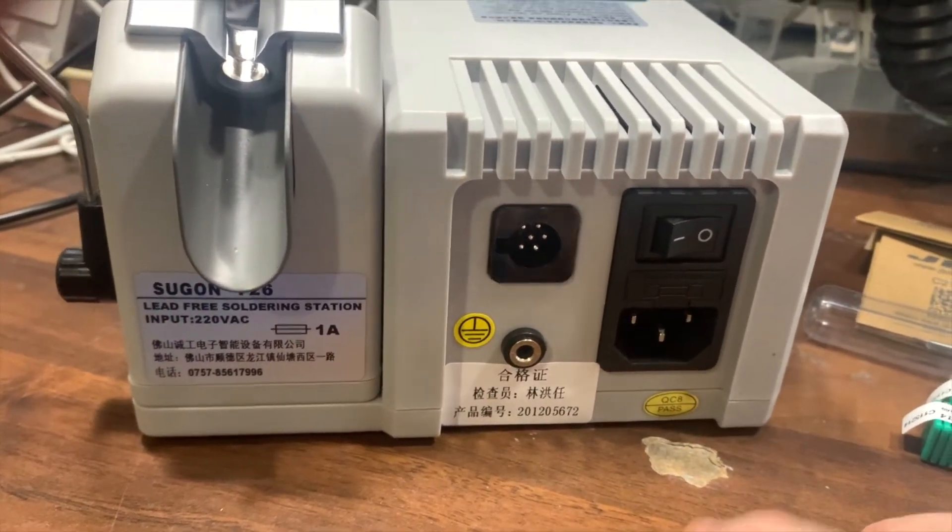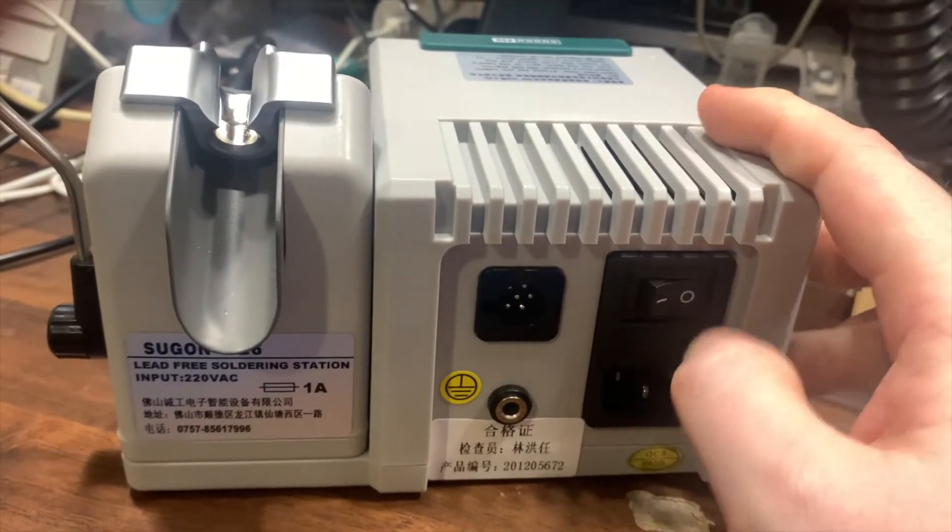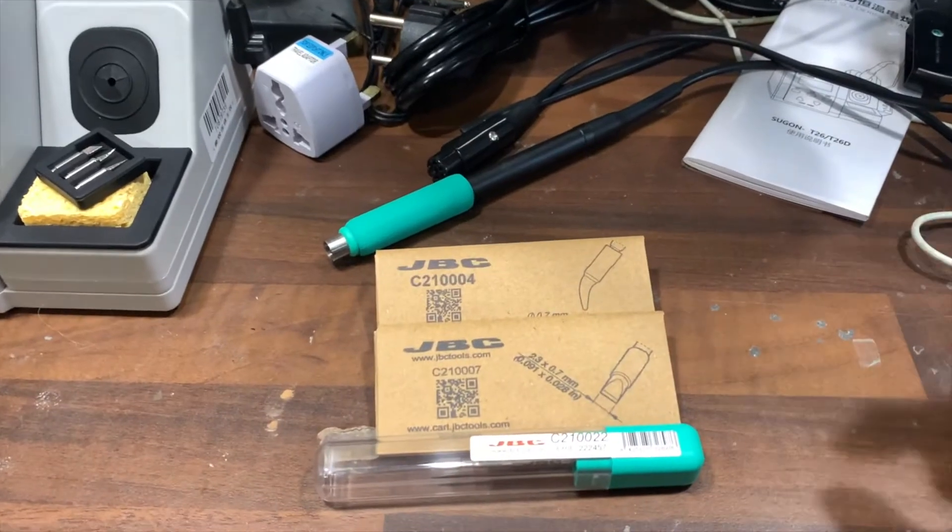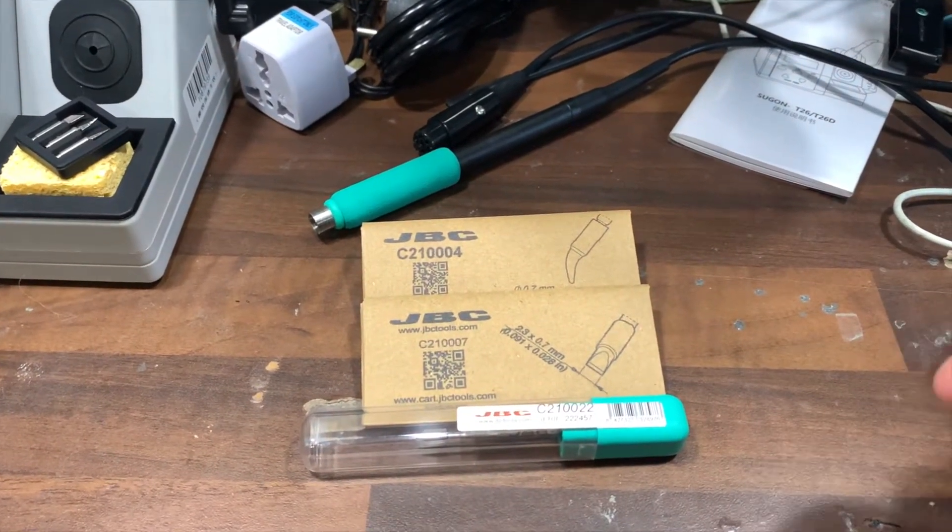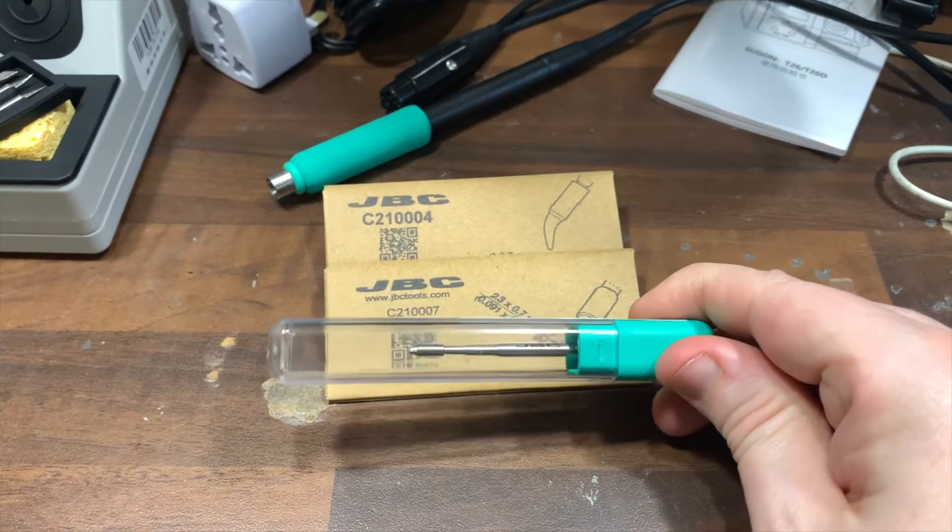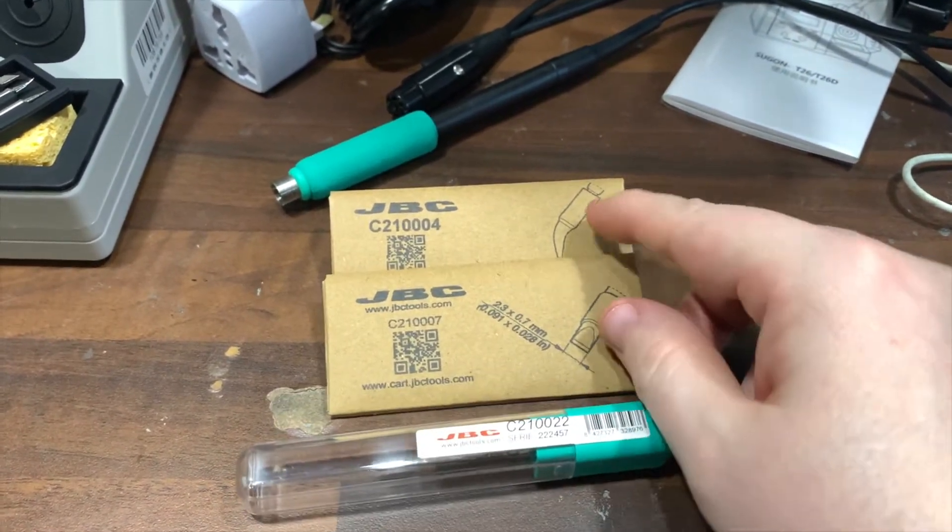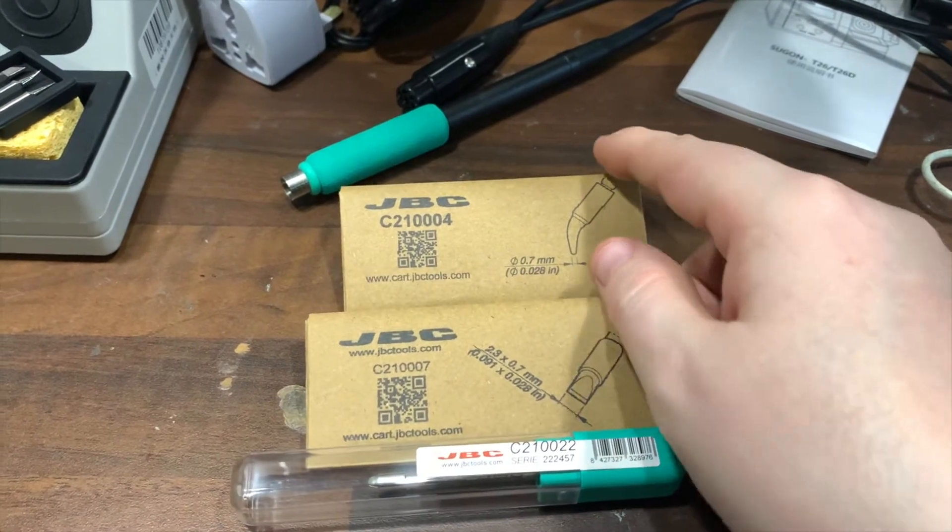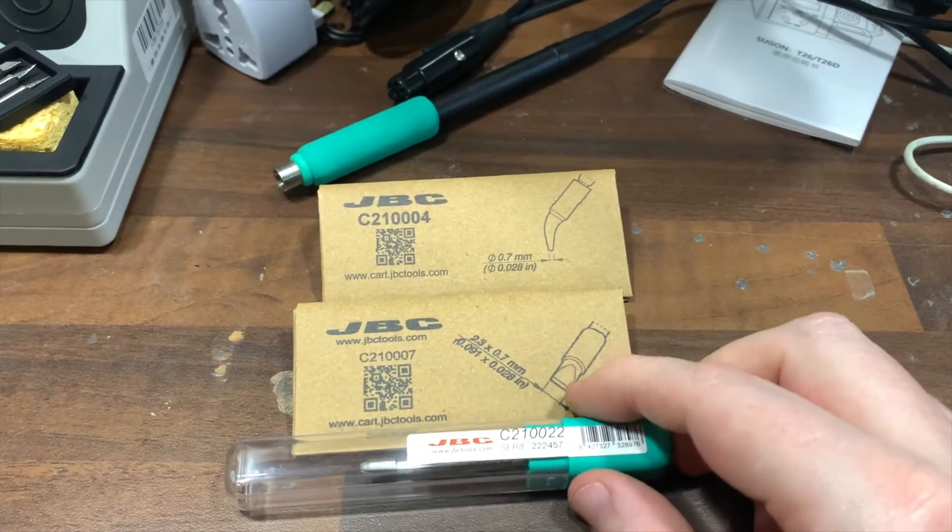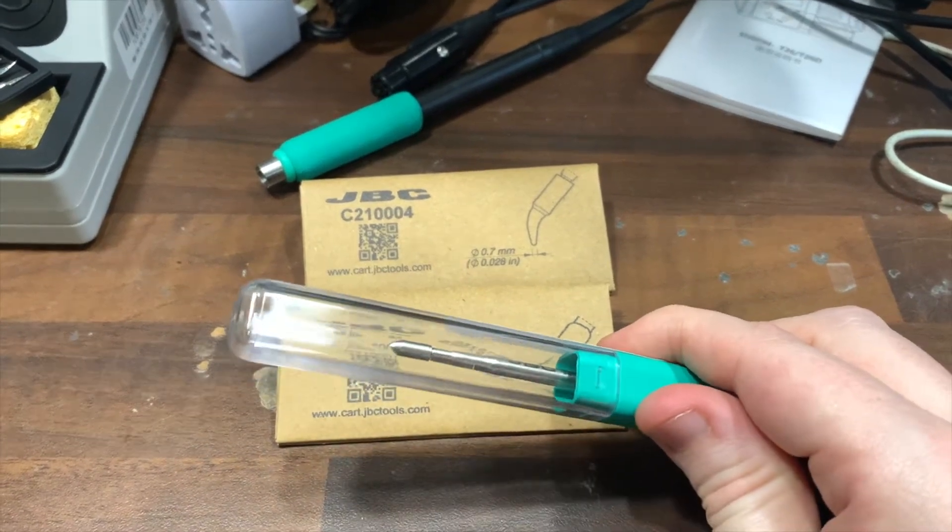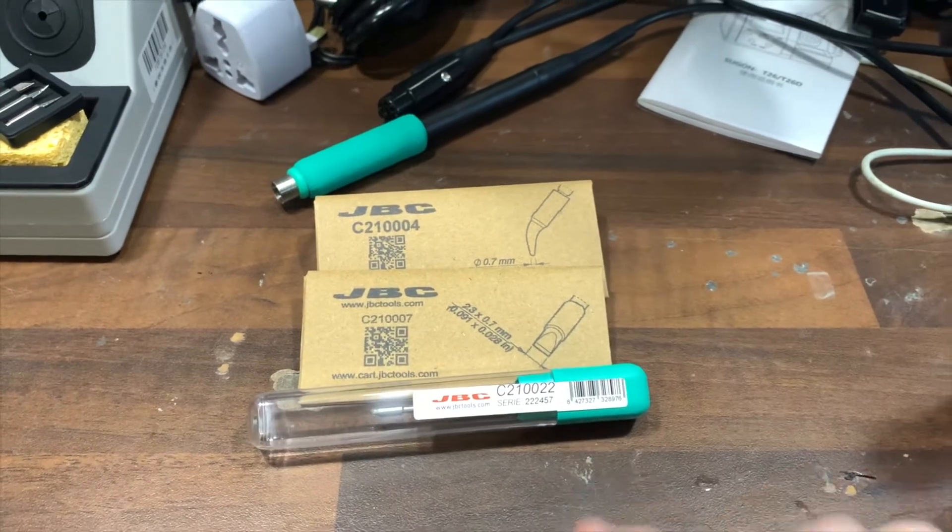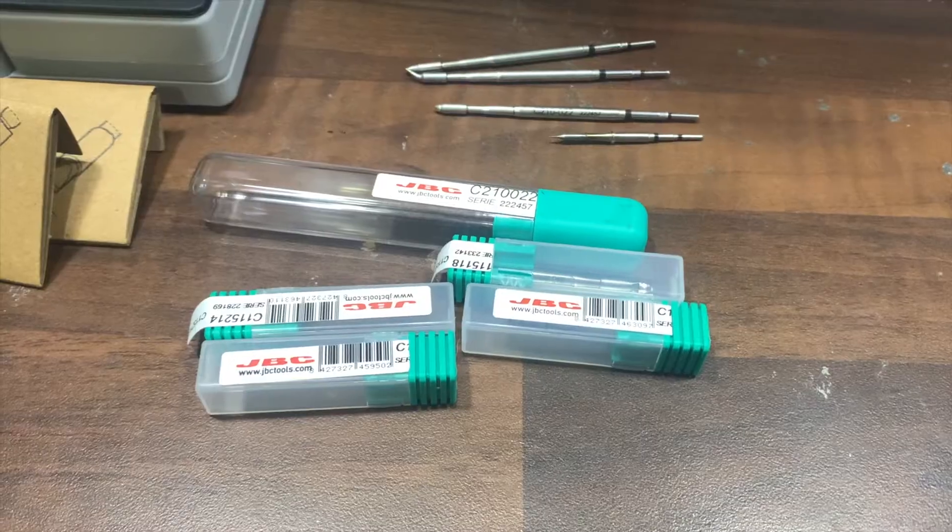On the back here you've got the earthing clamp cable, your on and off switch and also your soldering iron socket. I didn't actually get any soldering iron tips so I ordered these directly from JBC. You can actually buy them from the same seller as the Sugon place, but I actually found JBC website is actually cheaper than buying it from China and also you know they're genuine. They bought it from a certified seller from JBC. So yeah if you want tips I suggest buy them directly from JBC, they're a lot cheaper.